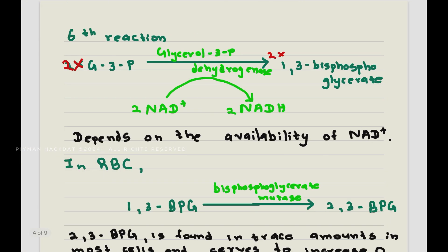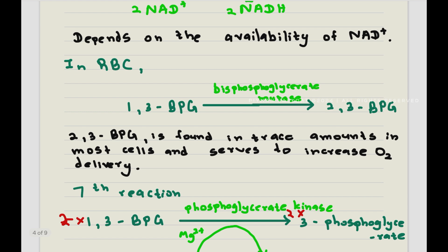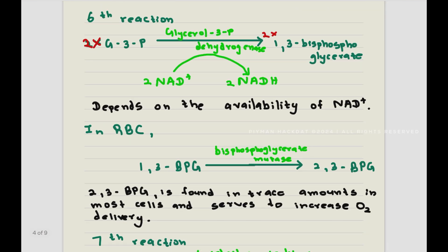Next, these two molecules of glyceraldehyde-3-phosphate are turned into 1,3-bisphosphoglycerate. Because two molecules are used, two molecules of NAD+ are used up and two molecules of NADH are synthesized. This reaction actually depends greatly on the availability of NAD+ in the cell — if it's not available, this reaction does not occur. In RBCs specifically, 1,3-bisphosphoglycerate with the help of bisphosphoglycerate mutase is turned into 2,3-bisphosphoglycerate.